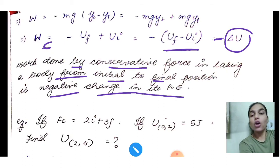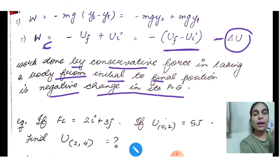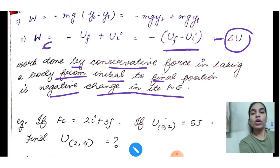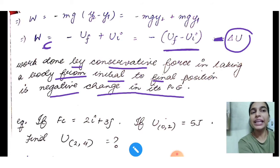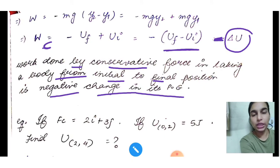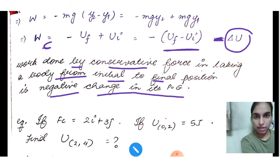The difference between the work-energy theorem and the potential energy law is: in the work-energy theorem you deal with kinetic energy and any force can be used — ΔK = W. In the potential energy law, only conservative forces apply and WC = −ΔU. Let's now do one or two numericals to make it clear.